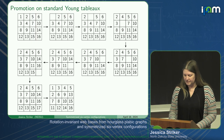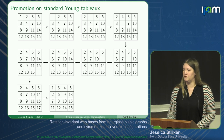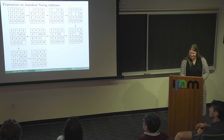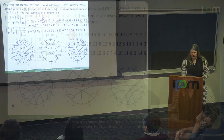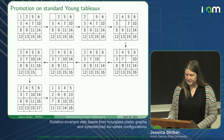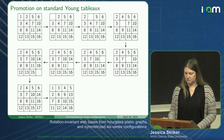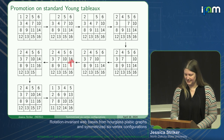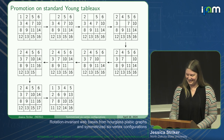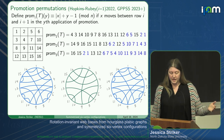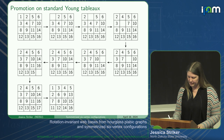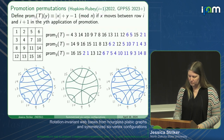Looking at promotion on a standard Young tableau, we can ask what number moved from row two to row one during the whole process—the answer is four. So the first number in promotion permutation one is four. Similarly, we can ask what moved from row three to row two—14—so the first number in promotion permutation two is 14. And 16 moved up from the fourth row, giving the first number in promotion permutation three. We keep recording a number each time we do promotion, and we're guaranteed to get back to the starting tableau in 16 steps.